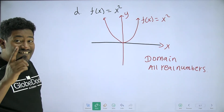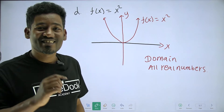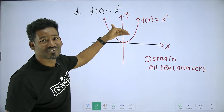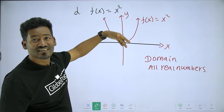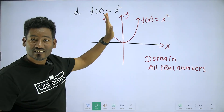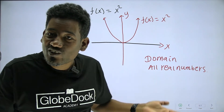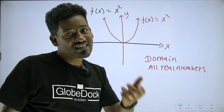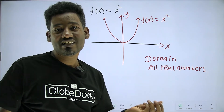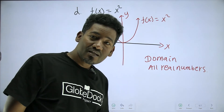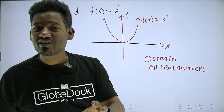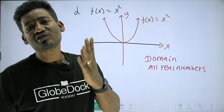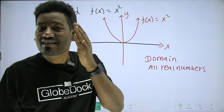Range. The y-value: f of x gives negative 1 squared equals 1, negative 2 squared equals 4, zero squared equals 0. All outputs are non-negative — the minimum value is 0.